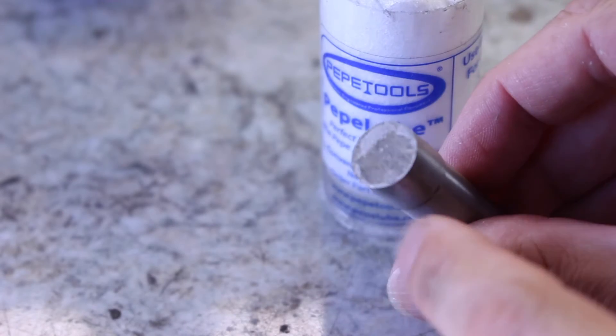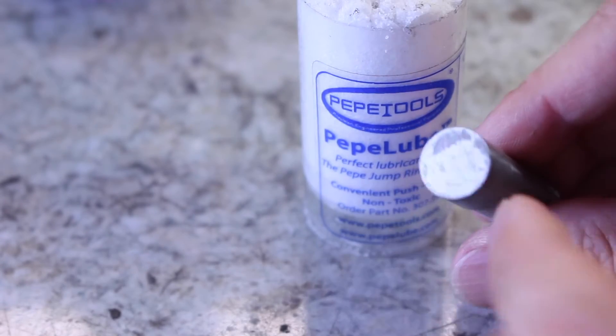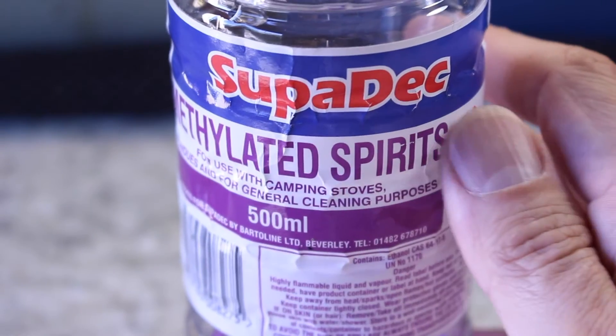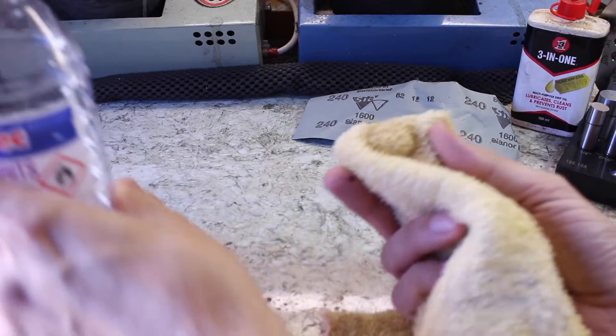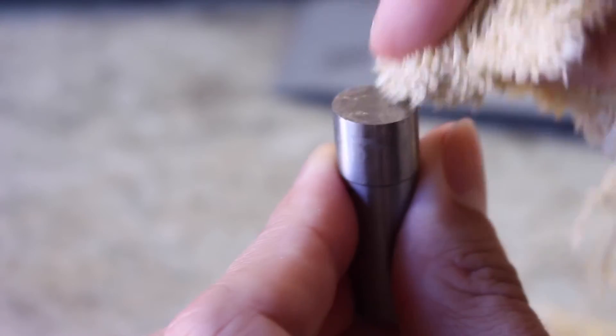The first thing I need to do is to clean off any residue or Pepe lube. You see this on the edges here. I'm going to use some alcohol and a cloth and just rub the ends to remove any traces of the Pepe lube.